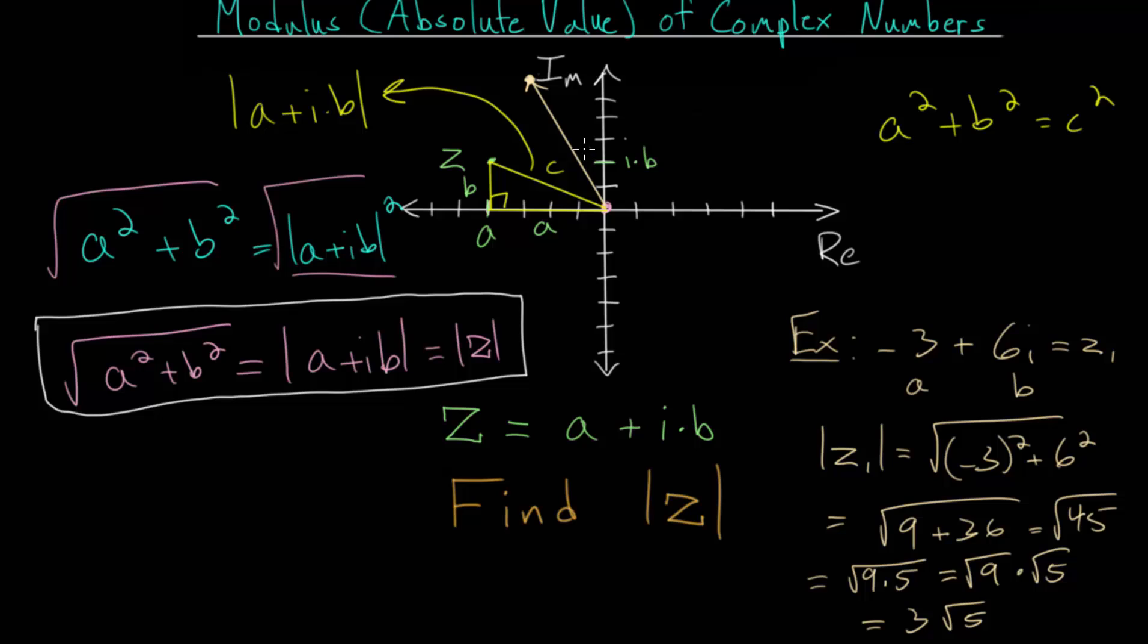And this arrow has a length, this vector has a length, and it has a direction. It has some angle from this real axis, though we will discuss the angle in a later video. But the length of the vector, often called the magnitude, is just this modulus or this absolute value.